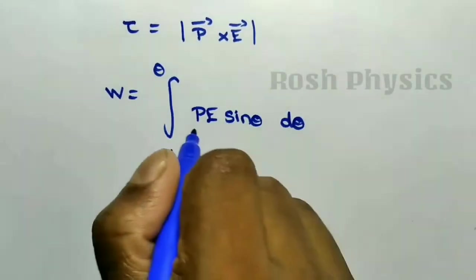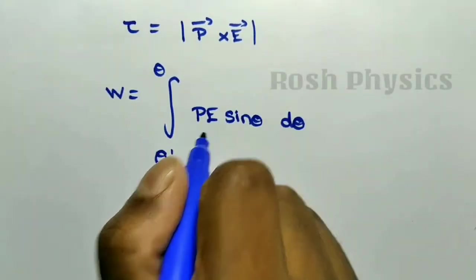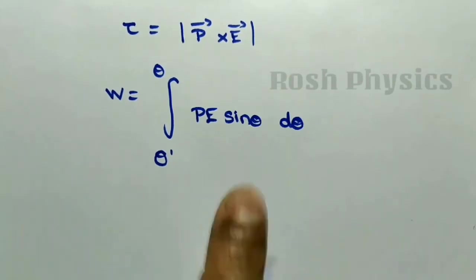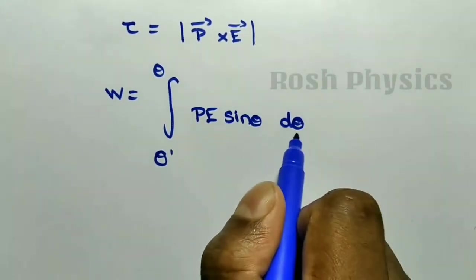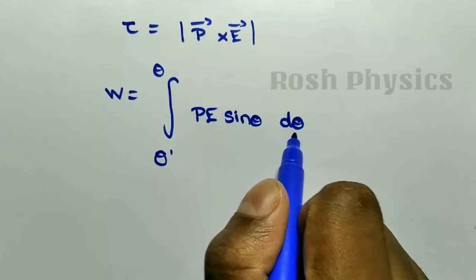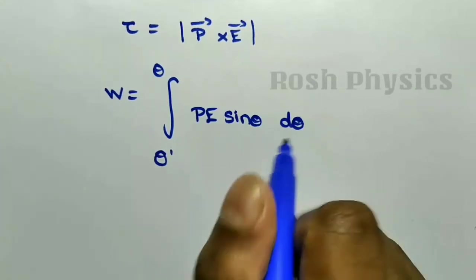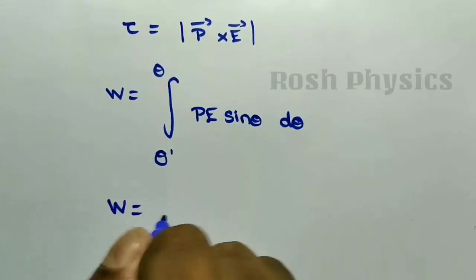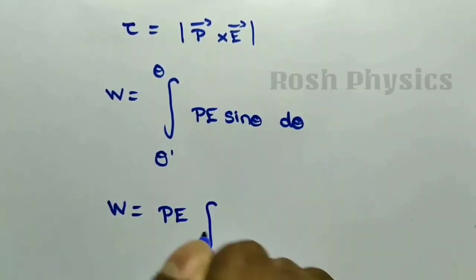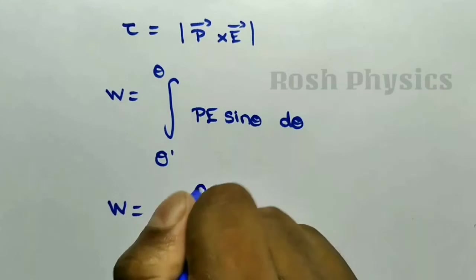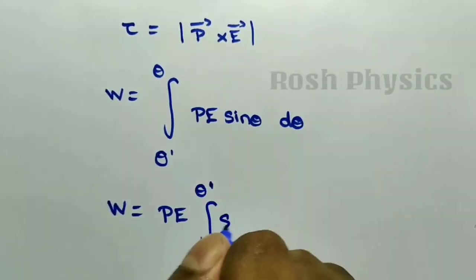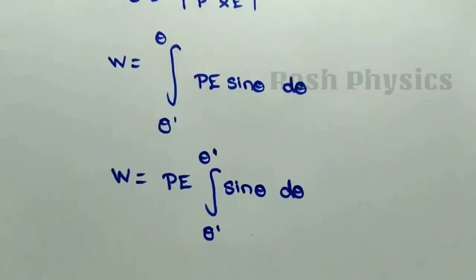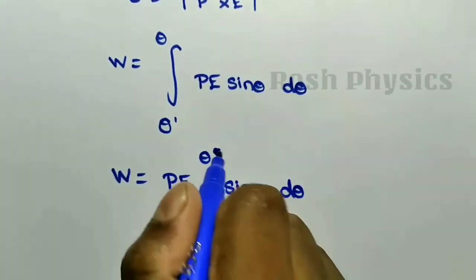Since p and E are constants in the integration, we only need to deal with the terms near dθ, which is sinθ. So we take pE as a constant term outside the integral, giving us pE ∫(θ' to θ) sinθ dθ.